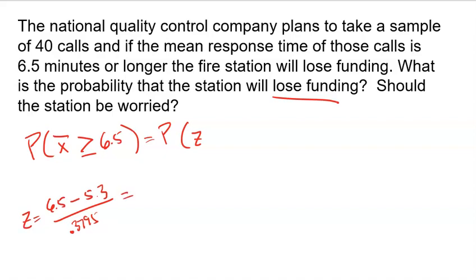So the standard deviation or the mean there, 5.3, take the value 6.5 minus the mean divided by standard deviation using the Z score formula. So you should get a Z score of 3.1621. So I'm trying to find the probability that a Z score is greater than 3.1621.